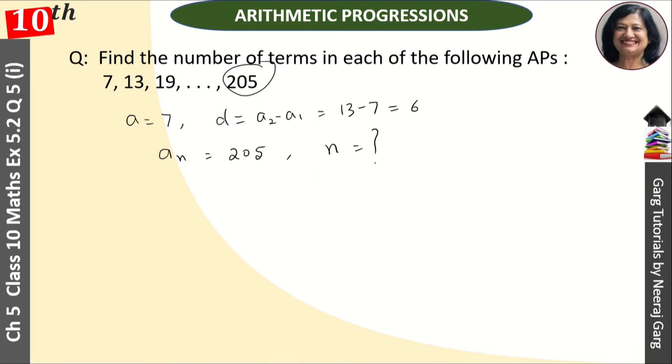So we have to find this. The formula for an is what? A plus n minus 1 times d, that is equal to an. The nth term formula is what we have to apply.